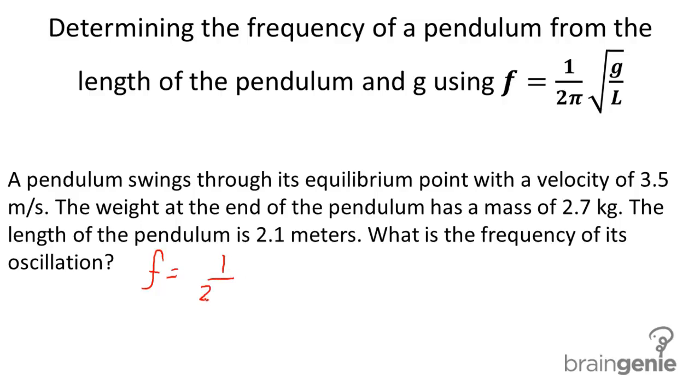Alright, the equation 1 over 2 pi times the square root of g divided by L. If you see in this equation, we don't need mass. That's not part of the equation. We also don't need the velocity.